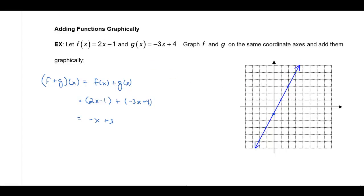Alright. And then let's graph g. The function g of x is negative 3x plus 4. So this has a y intercept of 4 and a slope of negative 3. That'd be a rise of negative 3 and a run of 1. So let's go ahead and graph that one as well.